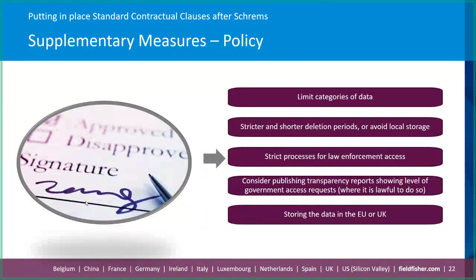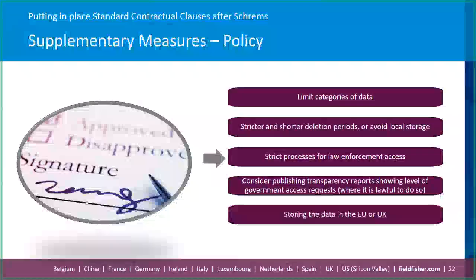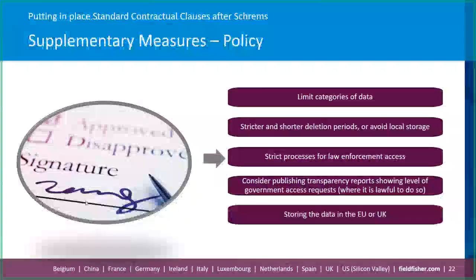In terms of policy measures, consider limiting the categories of data exported, with a focus on not transmitting any sensitive data from particularly vulnerable groups such as children. You could have stricter and shorter deletion periods for data processed by the importer, or avoid local storage — for example, the importer processing data upon receipt and then immediately deleting it. You could also document your law enforcement access regime, for example only permitting the importer to provide data when required under a court order. The importer could also consider publishing transparency reports showing the level of government access requests where lawful to do so.